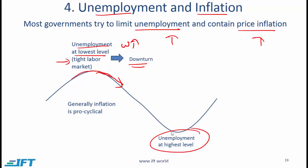Unemployment is at its highest level when we are close to the bottom of the economic cycle. Unemployment numbers lag the cycle a little bit, but by and large they are related to the business cycle. As for inflation, as shown in Exhibit 1, inflation goes up and down with the cycle. Since inflation moves with the cycle, we say that inflation is pro-cyclical.